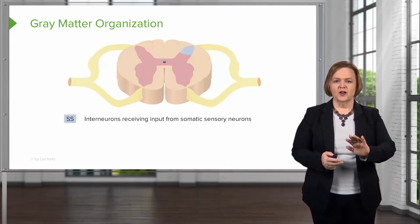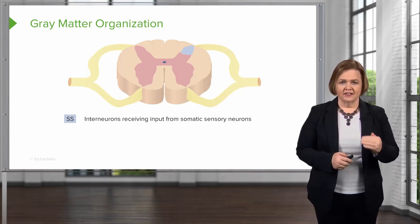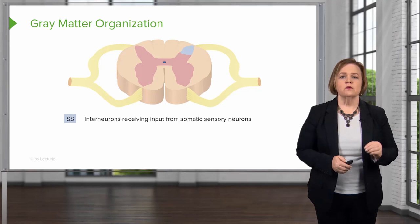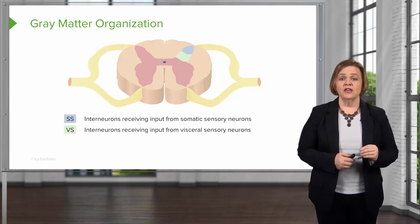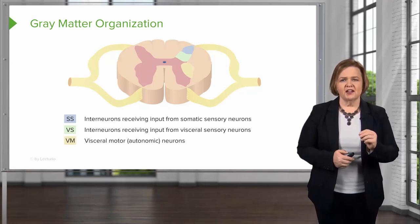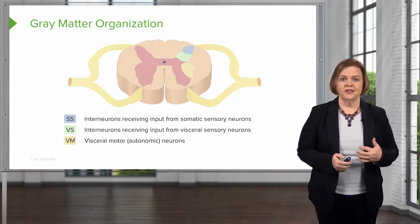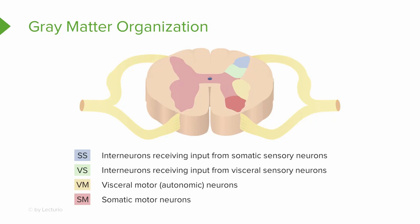Now we're going to start with a simpler graphic and talk about the interneurons. The SS labeled there stands for somatic sensory neurons. The interneurons in blue are receiving input from the somatic sensory neurons. VS — those are the interneurons receiving input from the visceral sensory neurons. The yellow-golden color is VM — the visceral motor, or autonomic neurons. Remember, autonomic means your body just runs on its own. And lastly, we have SM — the somatic motor neurons. Remember, sensory sends signals up, and motor sends signals down from the brain.